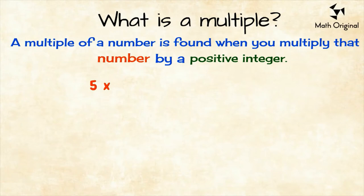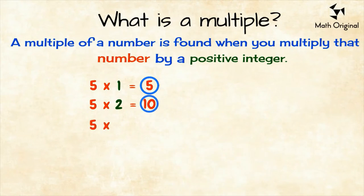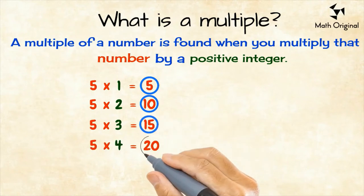5 times 1 equals 5, so the first multiple of 5 is 5. 5 times 2 equals 10, the second multiple is 10. 5 times 3 equals 15, the third one is 15. 5 times 4 equals 20, the fourth multiple is 20 and so on.